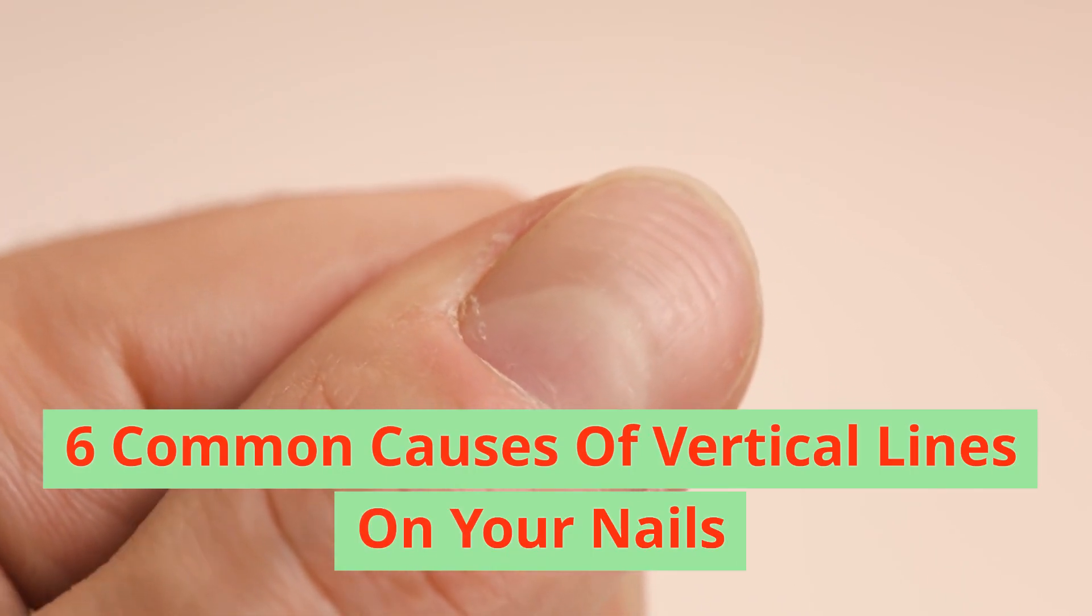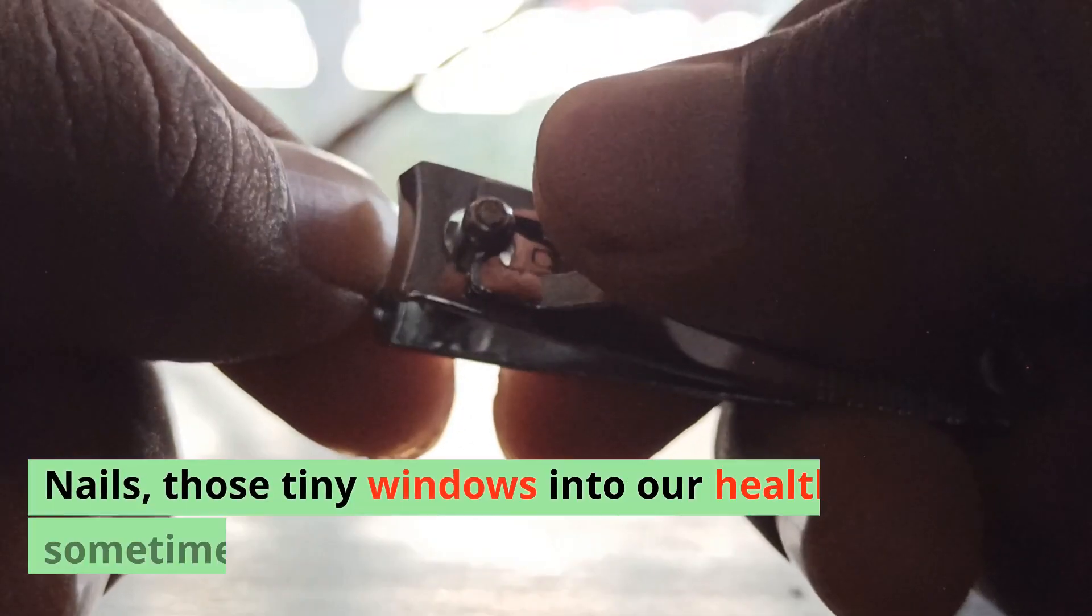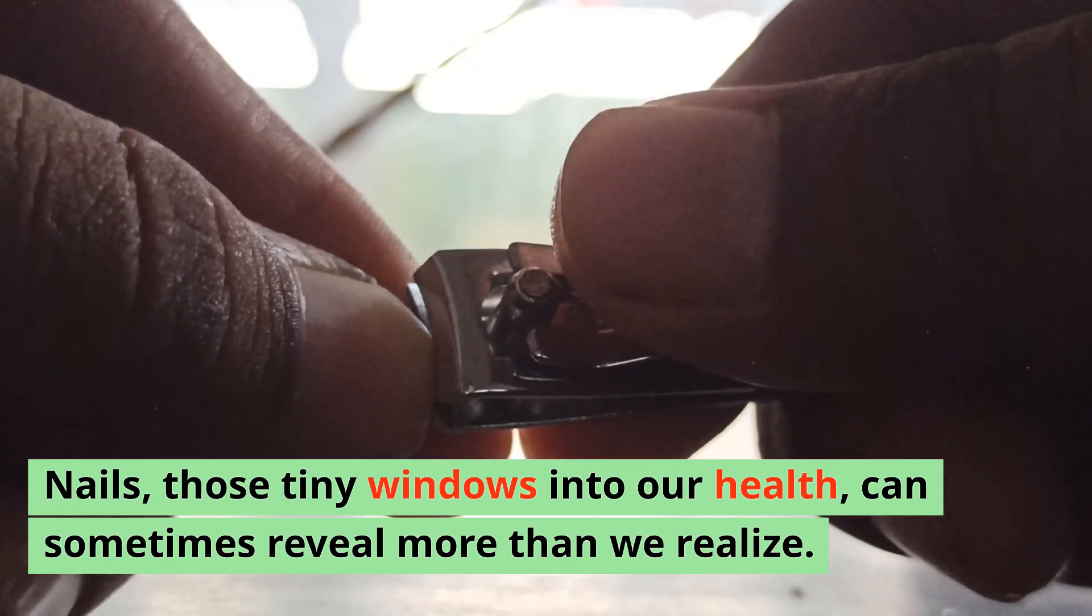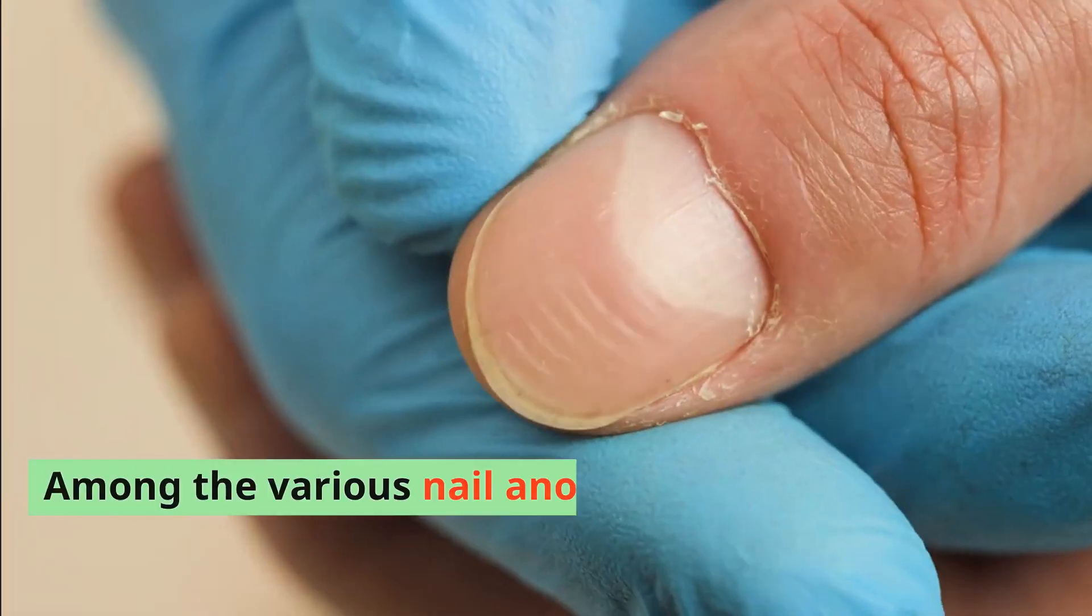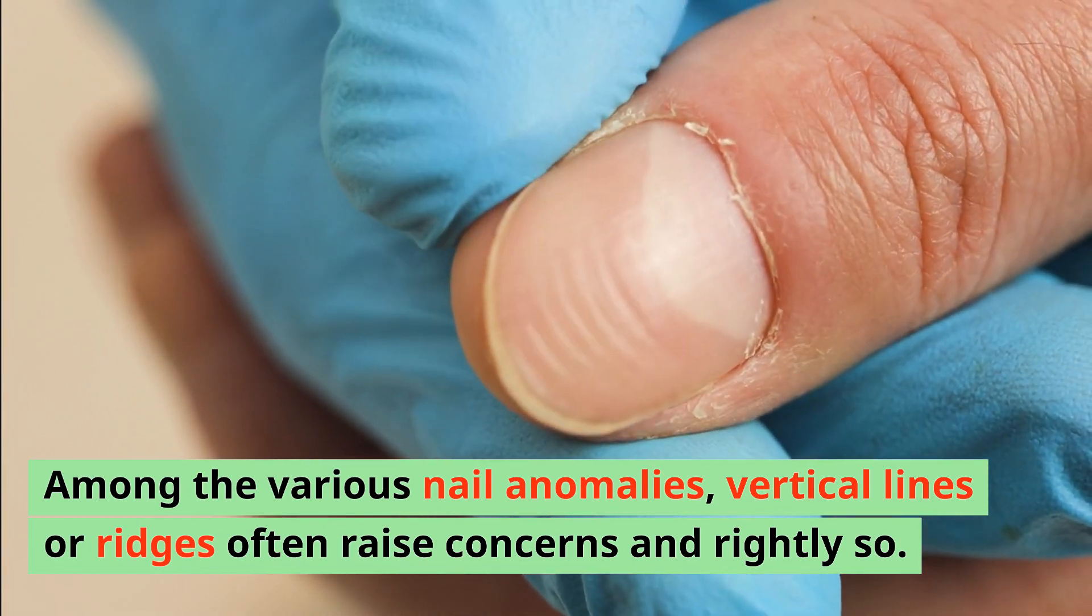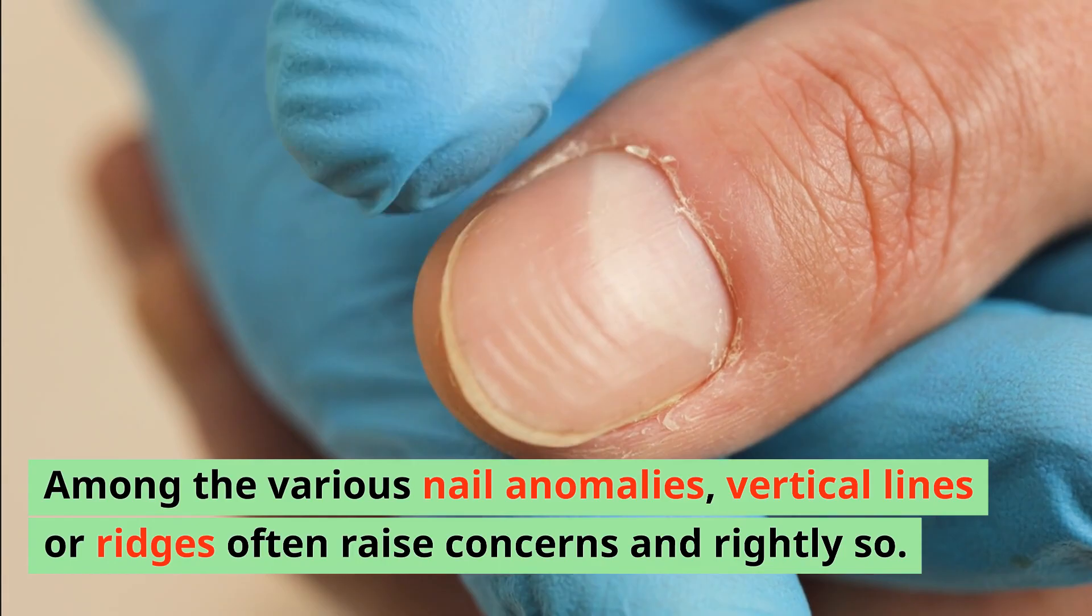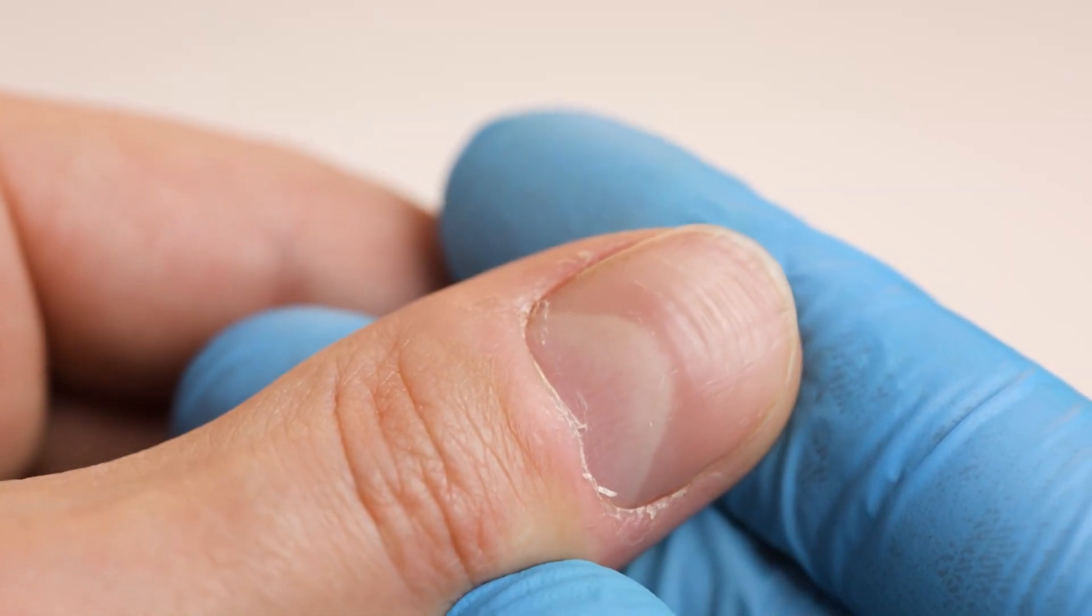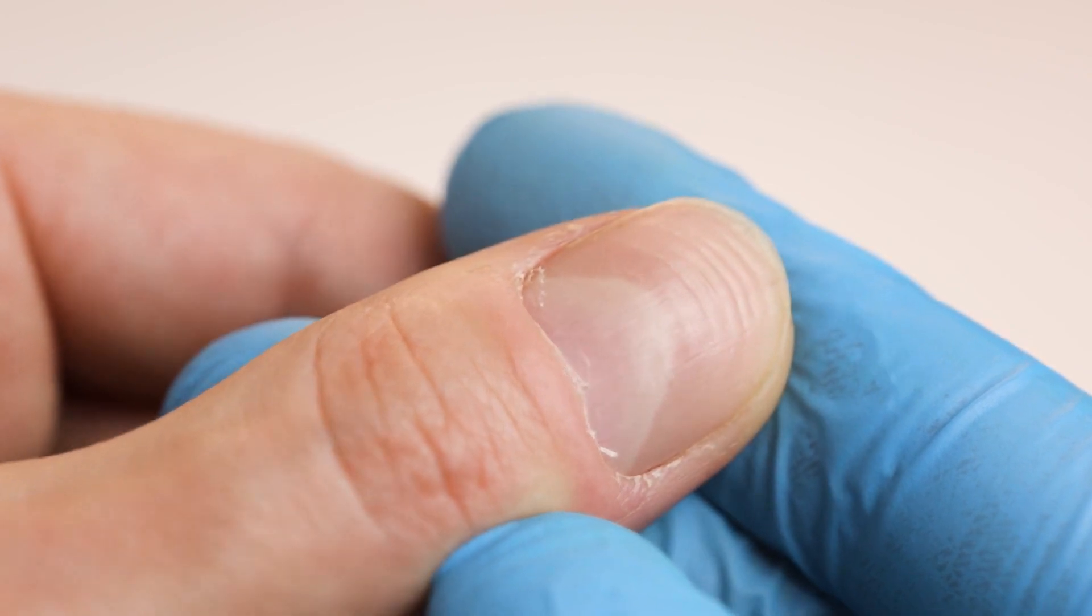Six common causes of vertical lines on your nails. Nails, those tiny windows into our health, can sometimes reveal more than we realize. Among the various nail anomalies, vertical lines or ridges often raise concerns, and rightly so. These seemingly innocuous markings may actually be indicative of underlying health issues that merit attention.